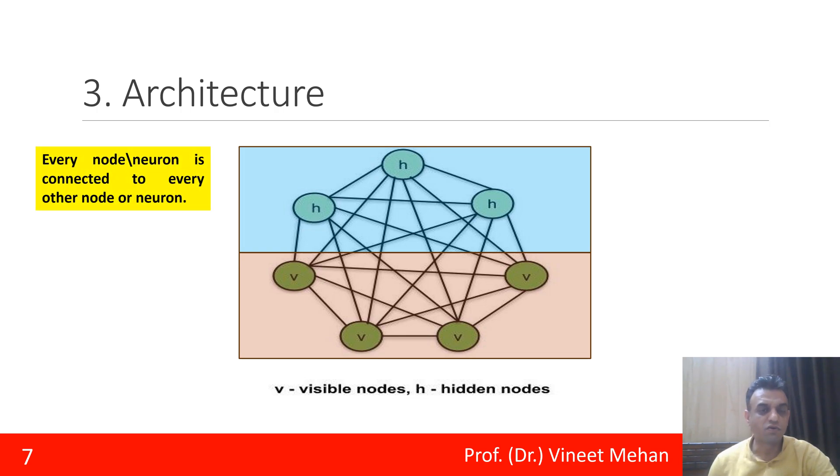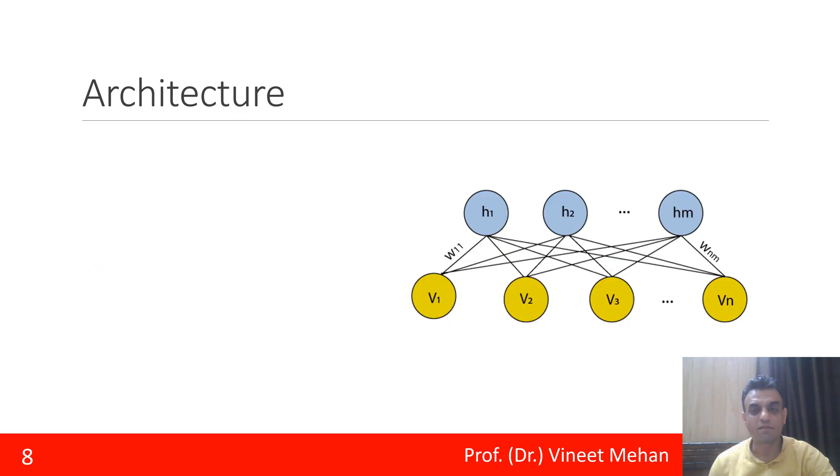Now all the nodes, the neurons, are connected to one another. When all are connected, that means there are too many connections. When there are too many connections, that means processing takes time, which means it is computationally complex.